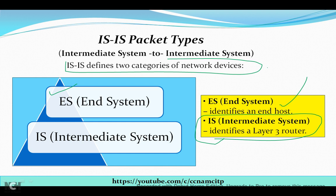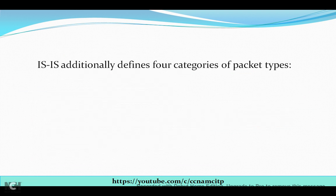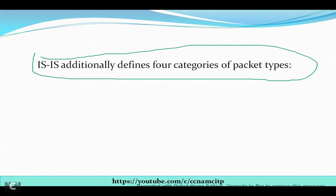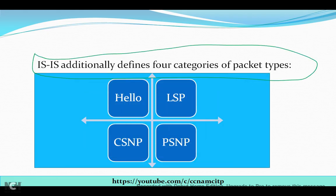IS-IS additionally defines four categories of packet types. The first one is the Hello packet, the second one is LSP, the third one is CSNP, and the fourth one is PSNP. We will see all four packet types here one by one.